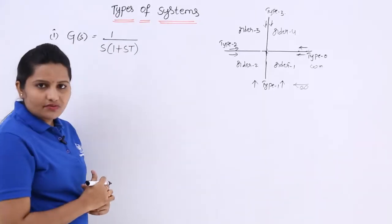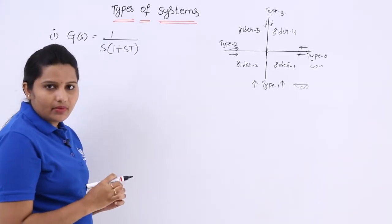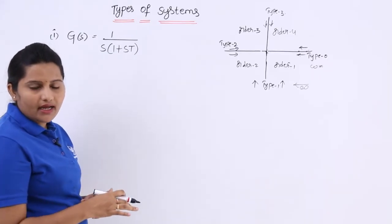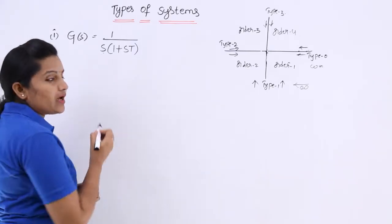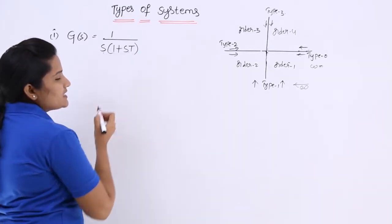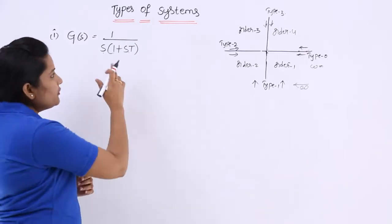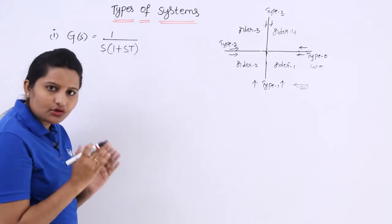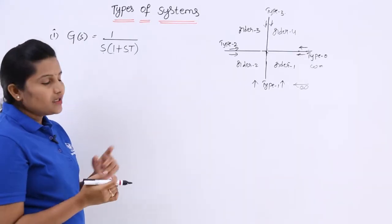Now, if you observe the transfer function of the system, the type number is decided by the number of poles at origin. The number of poles at origin can be defined by the number of single S terms in the denominator polynomial. If you observe, here I am having a single S term. If you have (1 + ST), and equate to 0, you get a pole other than 0 — not at origin. The S term represents the number of poles at origin.